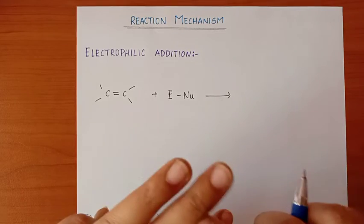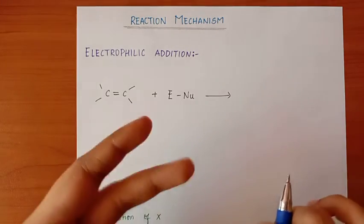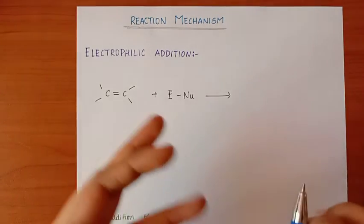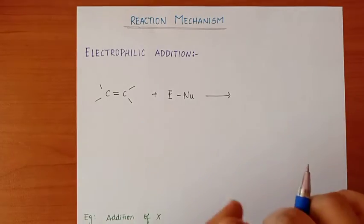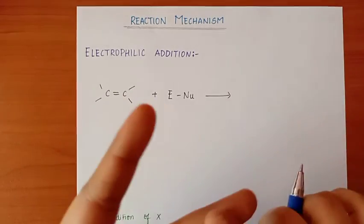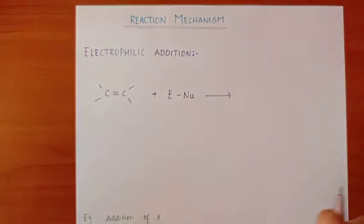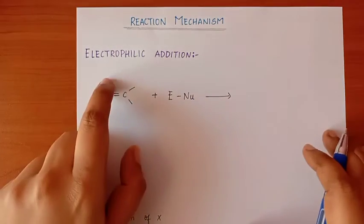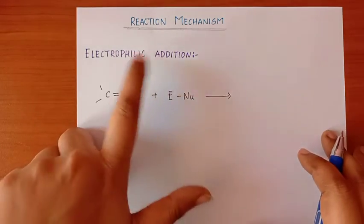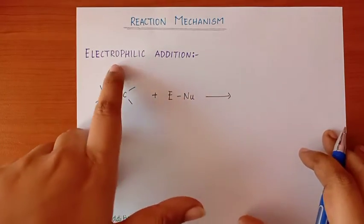Addition and Substitution are further divided: Addition includes Electrophilic Addition, Nucleophilic Addition, and Free Radical Addition. Substitution includes Electrophilic Substitution and Nucleophilic Substitution. There are 3 types of reactions overall. The first type we focus on is Electrophilic Addition Reaction.